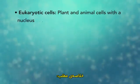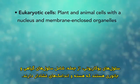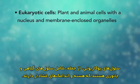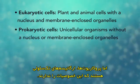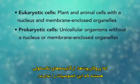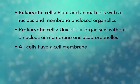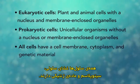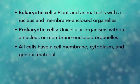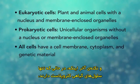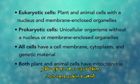In summary, eukaryotic cells are plant and animal cells with a nucleus and membrane-enclosed organelles, while prokaryotic cells are unicellular organisms without these things. All cells have a cell membrane, cytoplasm, and genetic material. And even though only plant cells have chloroplasts, both plant and animal cells have mitochondria.